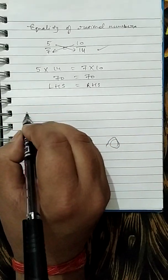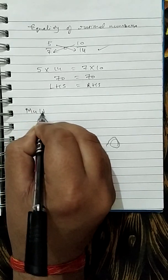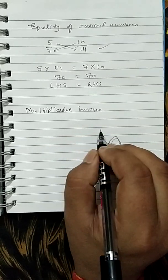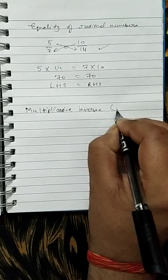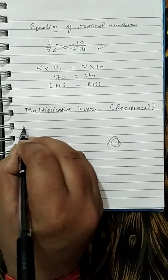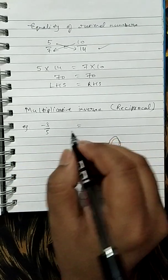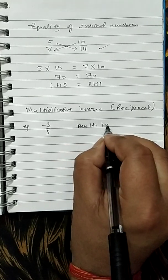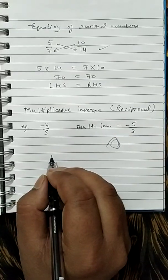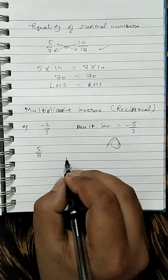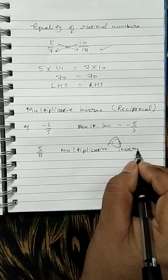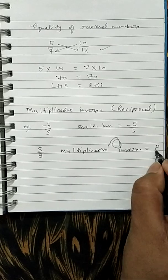Some questions are also frequently asked. The multiplicative inverse, this is also known as reciprocal. If we have an example, minus 3 upon 5, its multiplicative inverse will be 5 upon 3 of negative. And if we take an example, 5 upon 8, its multiplicative inverse will be 8 upon 5.